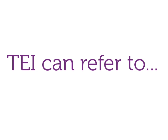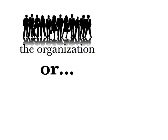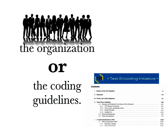In this video, we're going to talk a little bit about how TEI got started, and then look at a few examples just to get you familiar with what you can do with TEI. To start, let me explain that the acronym TEI can refer to two things: the International Organization of Textual Scholars, or the guidelines for marking up and encoding text which that organization developed.